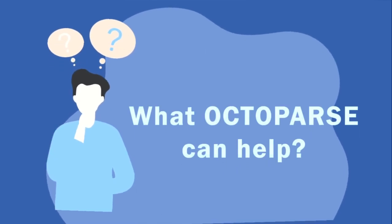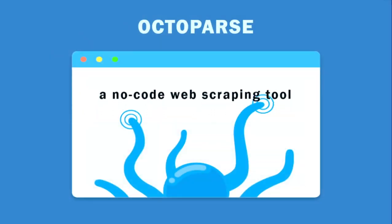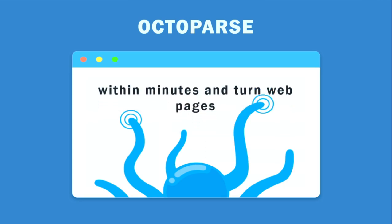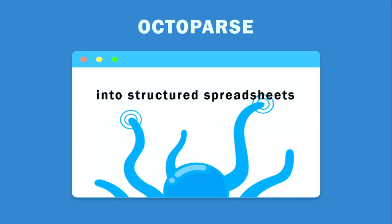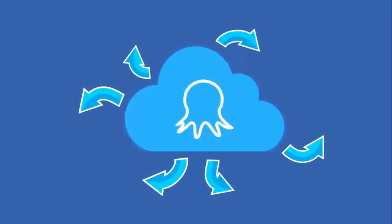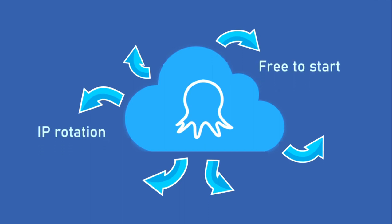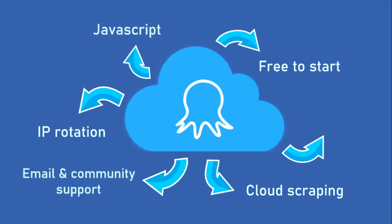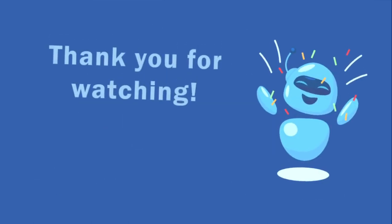Octopus is a no-code web scraping tool. You can quickly start scraping data within minutes and turn web pages into structured spreadsheets. Here are a few reasons to give Octopus a try: it is free to start, provides IP rotation for dealing with anti-scraping techniques, cloud scraping is available so you don't have to worry about network bandwidth or hardware setup, it is capable of scraping websites with dynamic JavaScript, offers email and community support, and includes pre-built templates for popular websites.